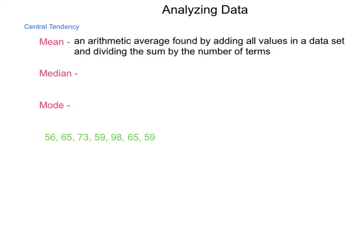Mean is an arithmetic average found by adding all values of a data set and dividing this sum by the number of terms. Normally, when people talk about average, this is what they intend, but any of these values can be considered the average.